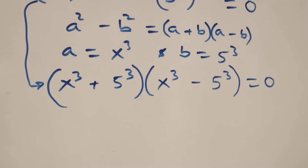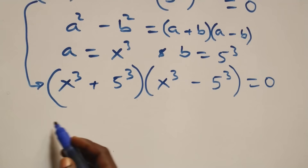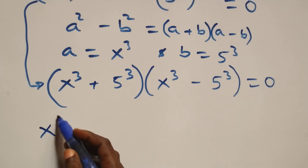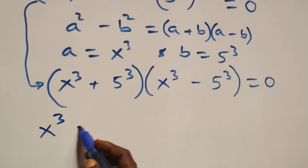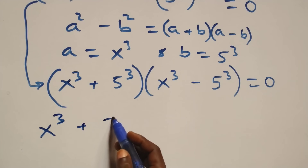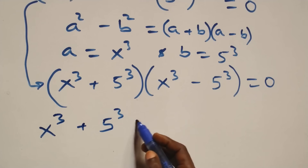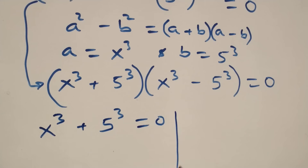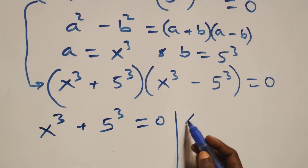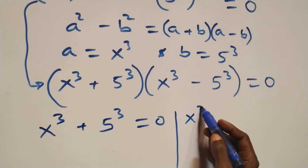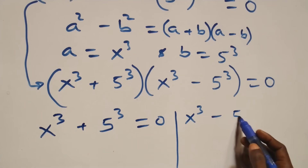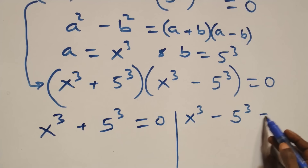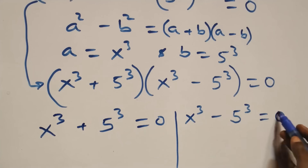We have two possible cases: the first one, x raised to the power 3 plus 5 raised to the power 3 equals to 0, or we have x raised to the power 3 minus 5 raised to the power 3 equals to 0.